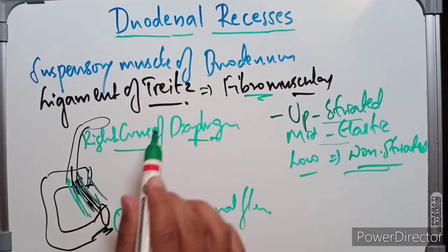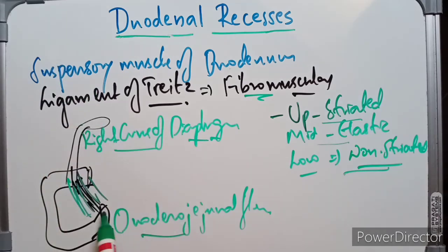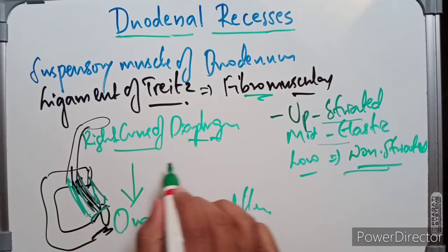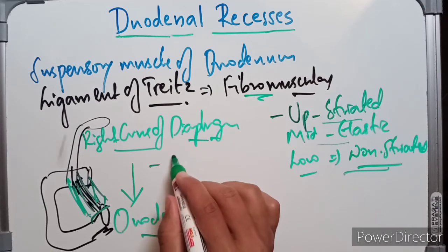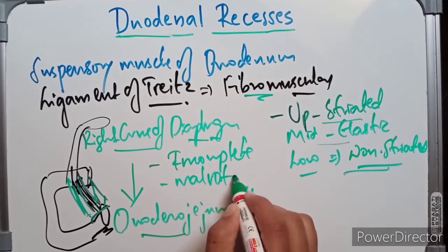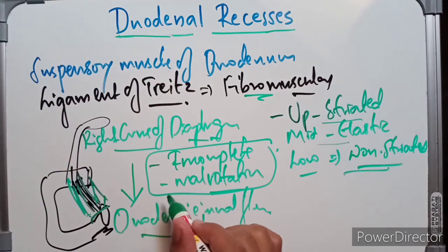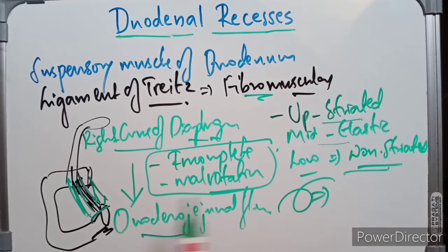The function of the ligament of Treitz is to fix the duodenal jejunal flexure and prevent it from being dragged down by the weight of the loops of small intestine. It also serves as an important landmark in radiological diagnosis, particularly in cases of incomplete rotation or malrotation of the small intestine.